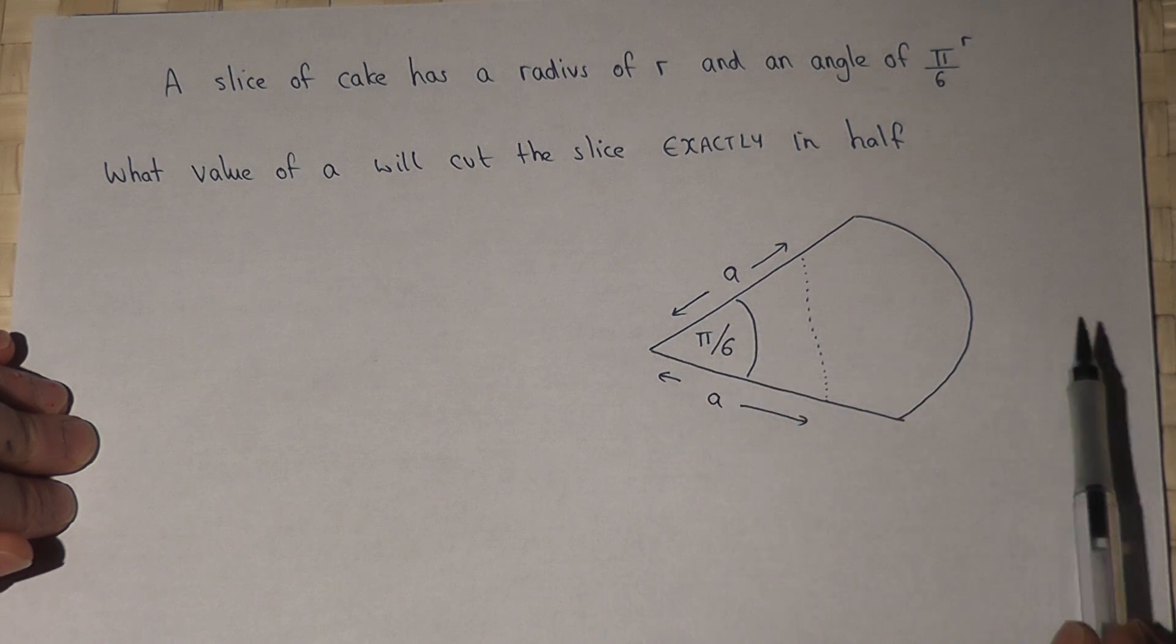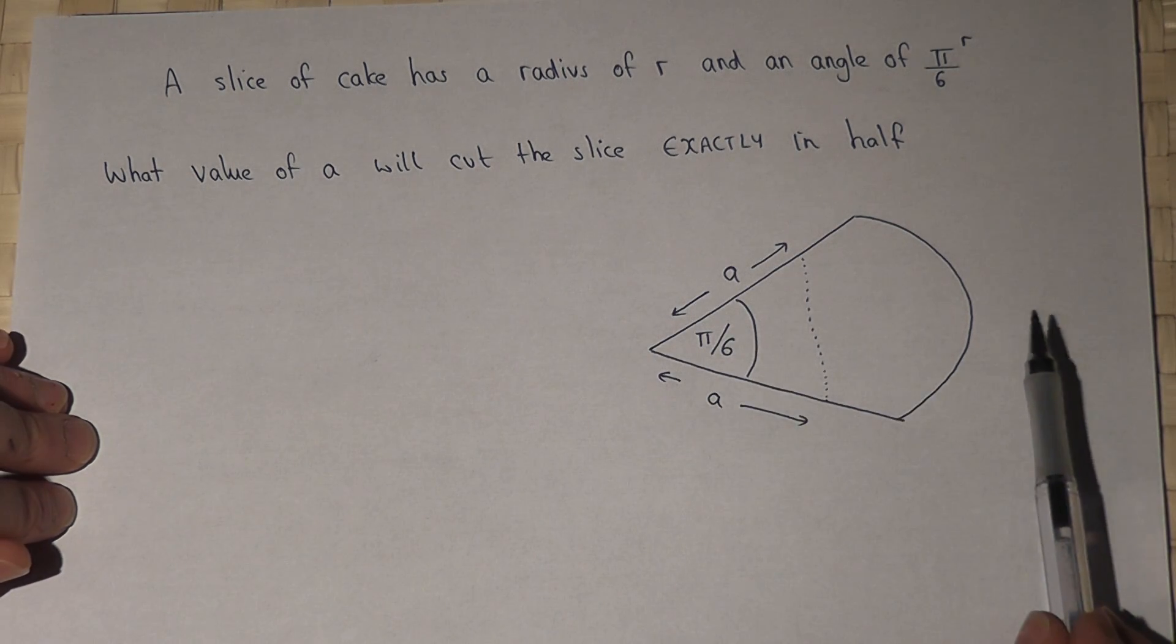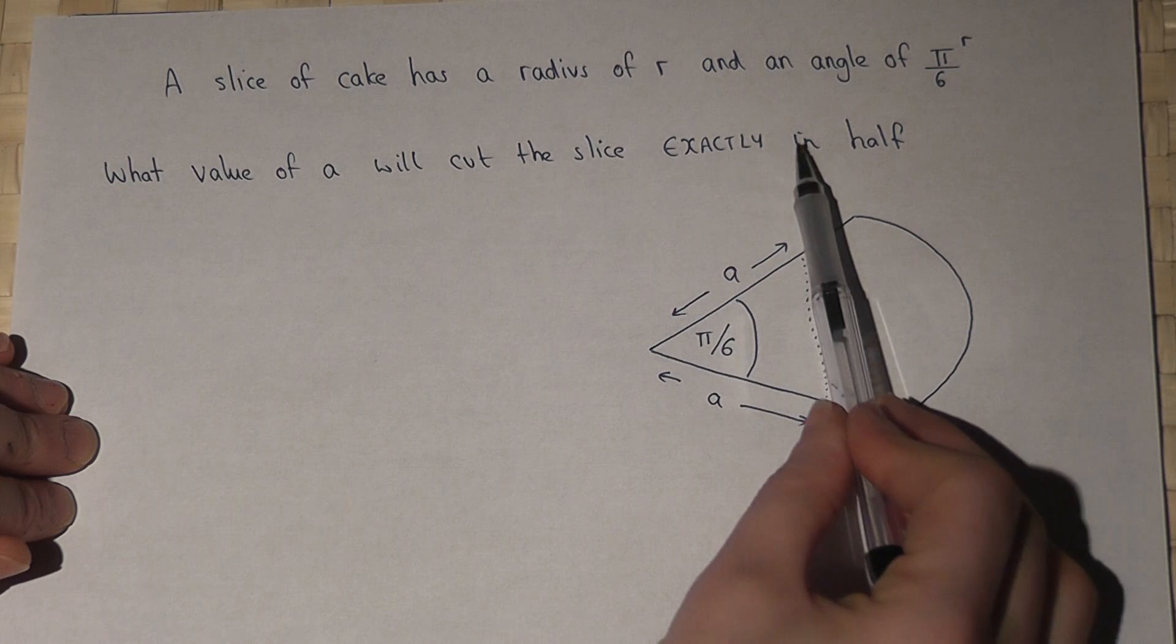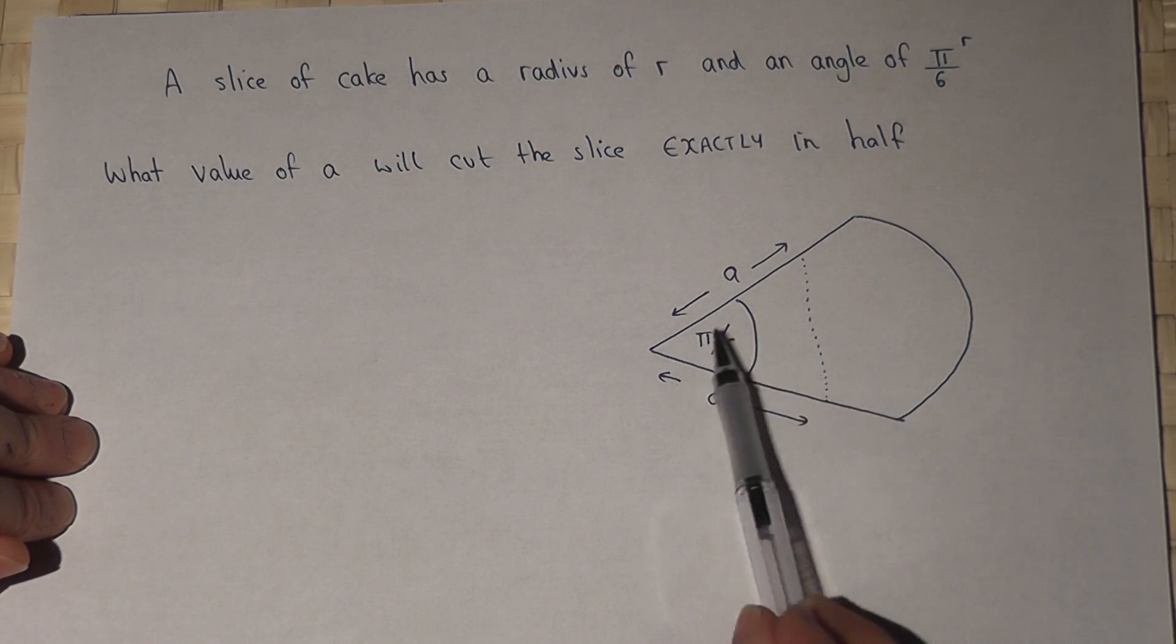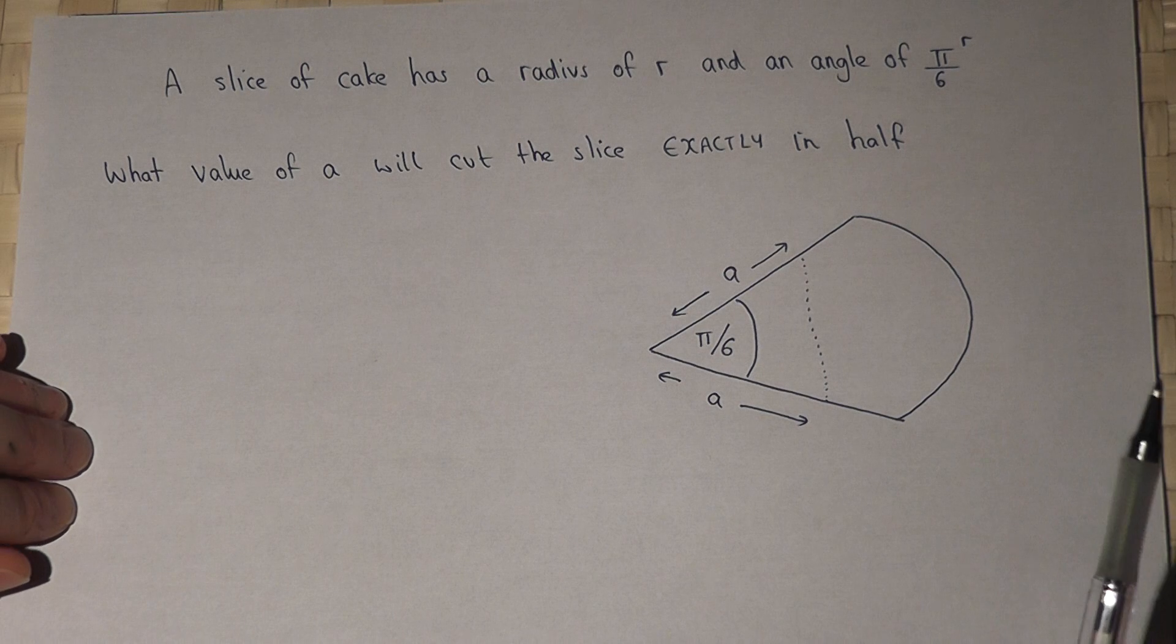The question is what value of A if you cut down ensures that those two halves are of equal area.